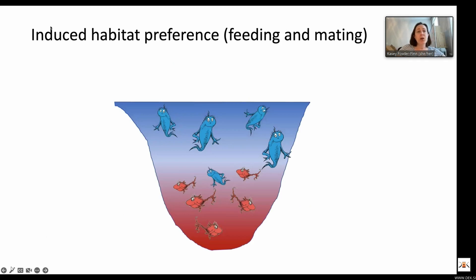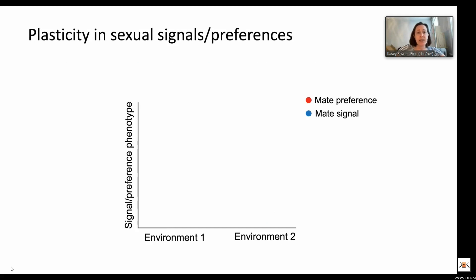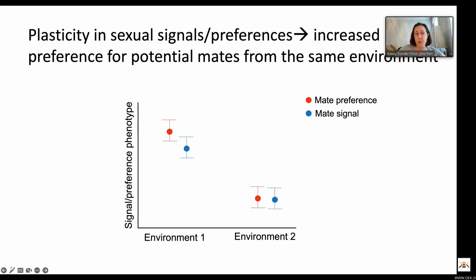You can also have induced habitat preference for feeding and mating. If you prefer to feed and mate where you grew up, that means you have increased encounters with potential mates that grew up in the same environment as you. You can also have plasticity in sexual signals and preferences. In environment one, male signals and female preferences are high in value; in environment two, they are low in value. This means there's increased preference for potential mates that grew up in the same environment.